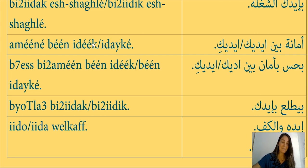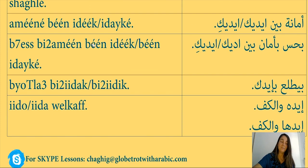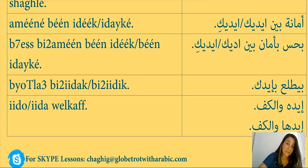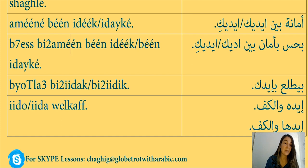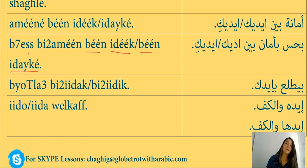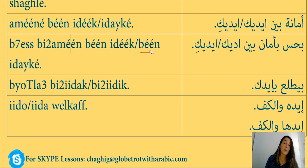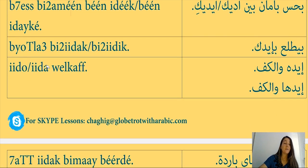The next expression: pahis bi amene bein idaiq or pahis bi amene bein idaik. Pahis means I feel, bi means with, amene means safety — so I feel safe. Bein idaiq means between your hands. Pahis bi amene bein idaiq means I feel safe in your arms.